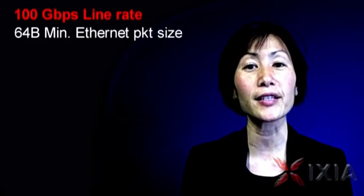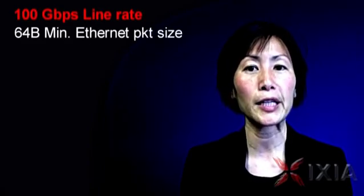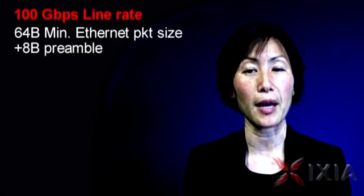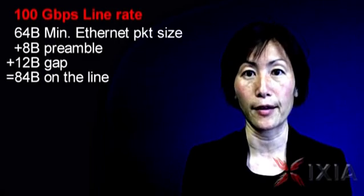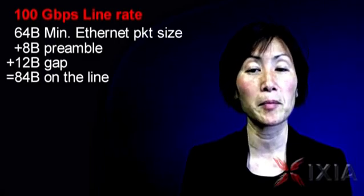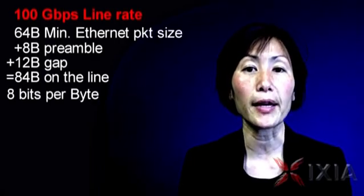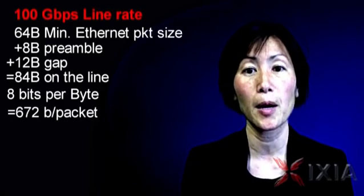But we could work through the math together to figure out how many packets per second that is. We'll start out with 64 bytes, which is the minimum Ethernet packet size, and there's 8 bytes preamble, 12 bytes gap — that's 84 bytes on the line for the minimum packet size of 64 bytes. And there are 8 bits per byte, and that gives you 672 bits per packet.